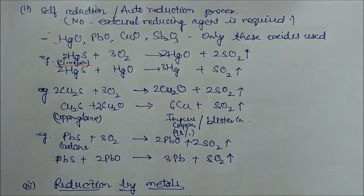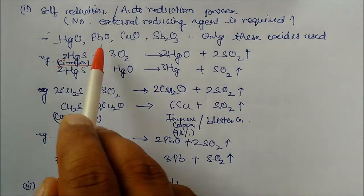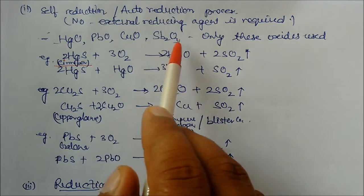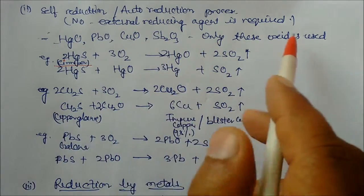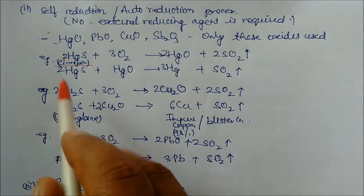No external reducing agent is required. So here number of elements are very limited like mercury oxide, lead oxide, copper oxide, antimony oxide. So only these metals are self-reduced. How is it reduced? Let us see through the examples.